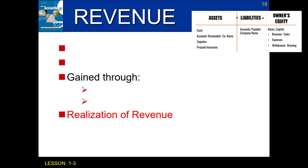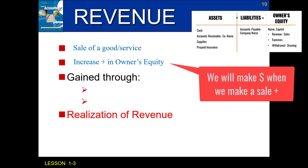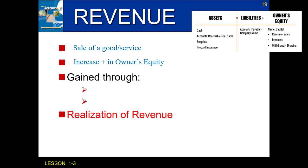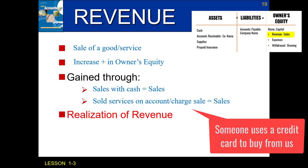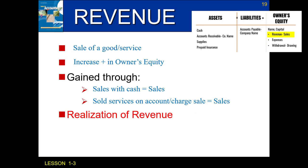The first change to owner's equity is revenue, which comes from selling a good or service. We make money or revenue when we sell something, and this causes us to increase our owner's equity. There are two keywords to look for: 'sales with cash' — if I sell something and they give me cash, I make revenue — and 'sold services on account,' which is a charge sale or credit card payment. The account title for both is 'sales.'